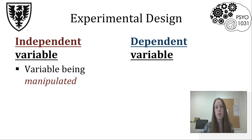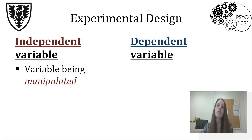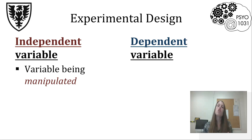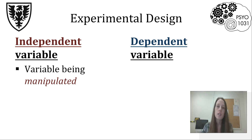For example, if I were interested in a new energy drink that I just invented, and I want to see whether or not it changes alertness — does it make people more alert? When I look at whether or not my energy drink does something, I'm manipulating something. I'm adding something to this situation, giving people an energy drink they didn't previously have. So in this example, the energy drink — the addition of that — would be your independent variable. That's what I'm changing in this situation.